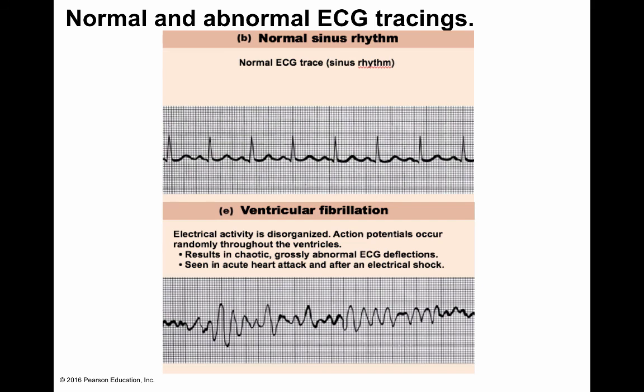Ventricular fibrillation is considered a heart attack. The electrical activity is completely disorganized — action potentials are occurring randomly throughout the ventricles, resulting in a chaotic, grossly abnormal ECG. It's seen in acute heart attacks and after electrical shock. These are three examples comparing normal ECG tracings to abnormal ones.